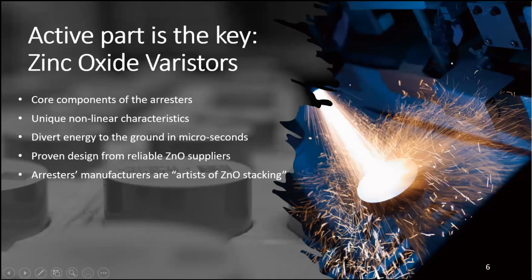The key component of the surge arrester is the zinc oxide varistor. As arrester manufacturers, we see ourselves as artists of ZnO stacking — playing with the number of blocks, the type of blocks, and the diameter of blocks. These components have a unique non-linear characteristic that diverts energy to ground in microseconds. Since the 1980s, zinc oxide varistors have been a proven technology for handling overvoltages.